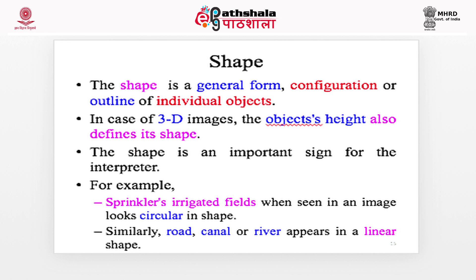The next element is shape. Shape is the general form, configuration, or outline of individual objects. In the case of 3D images, the object's height also defines its shape. Shape is an important sign for the interpreter. For example, a sprinkler-irrigated field, when seen in an image captured from space, looks circular in shape. Similarly, roads, canals, or rivers appear in a linear shape.